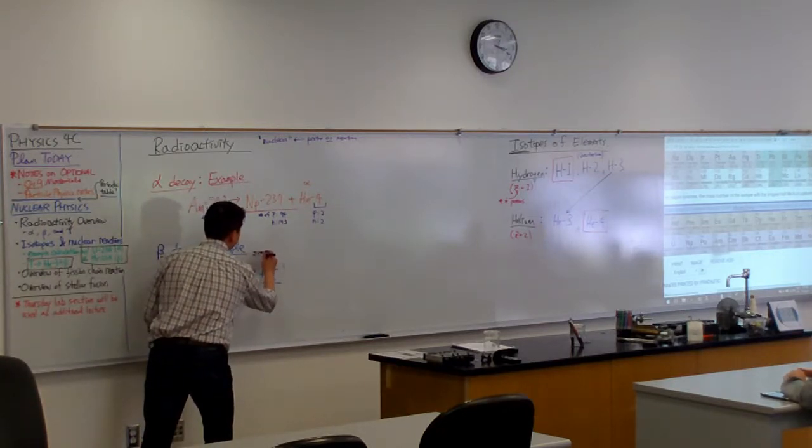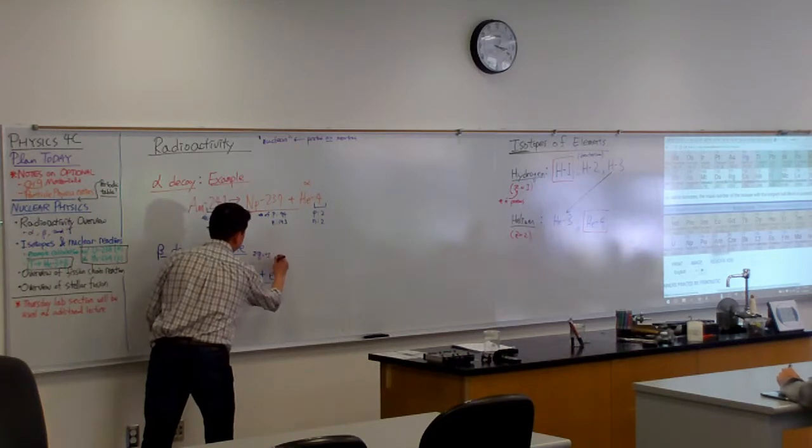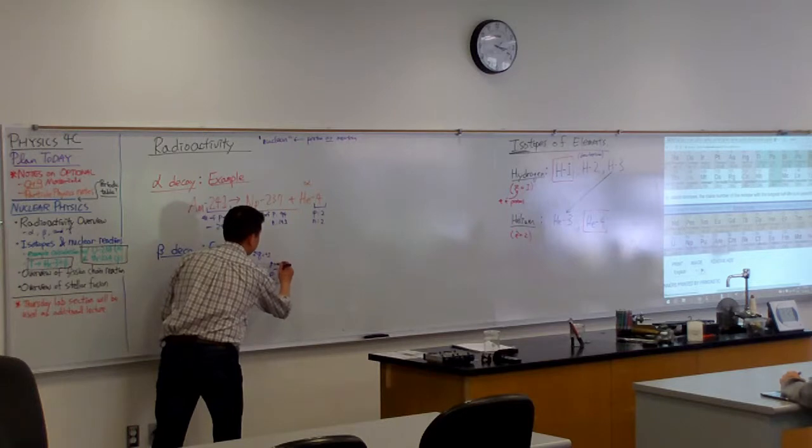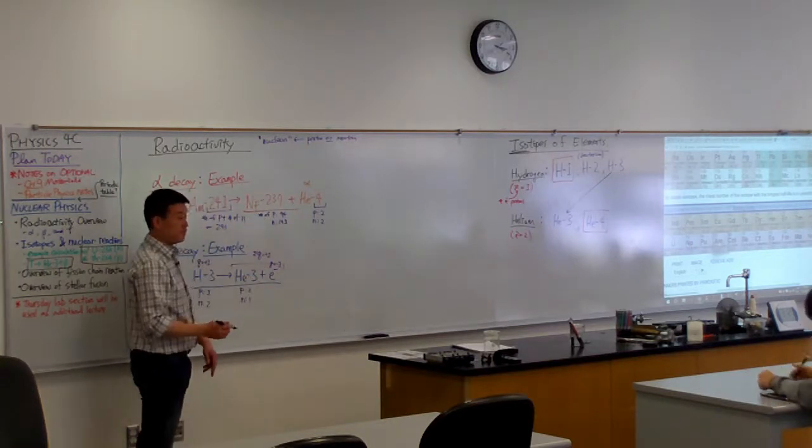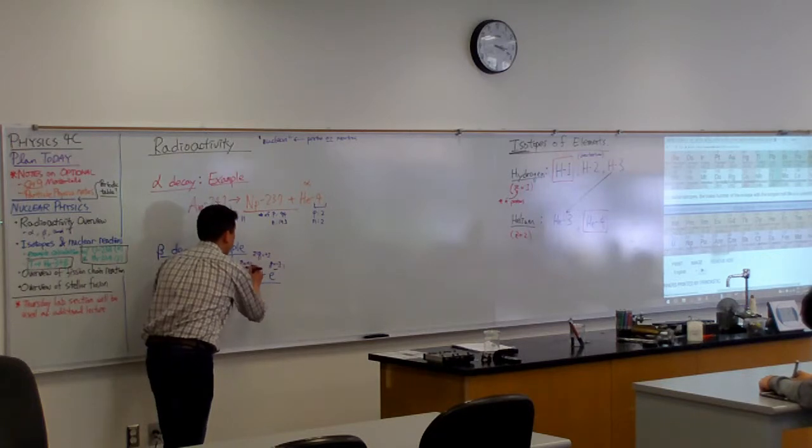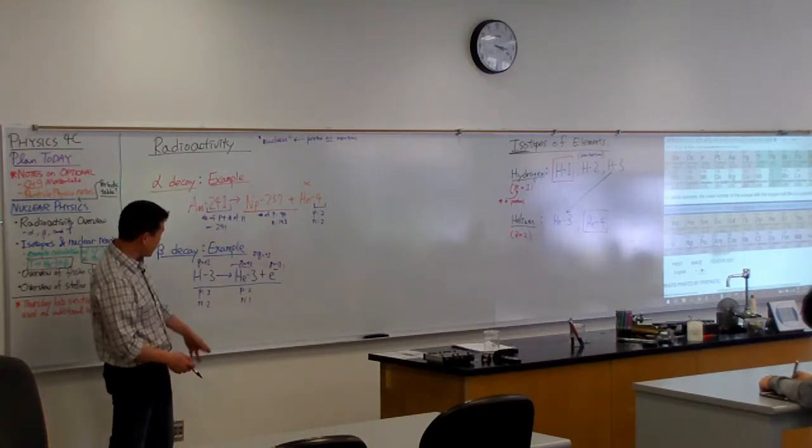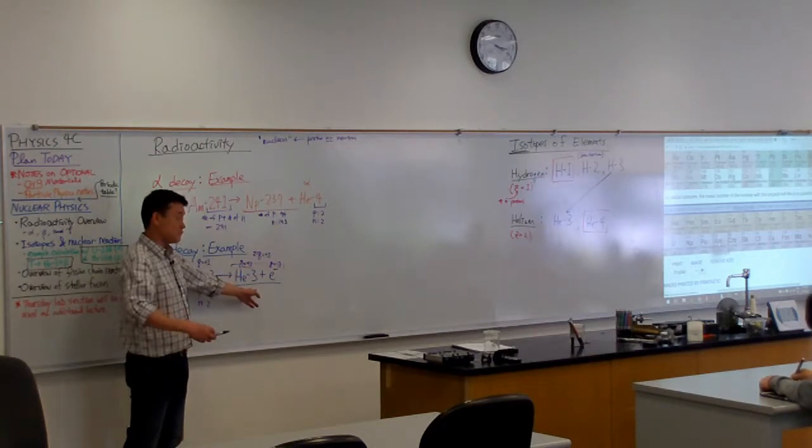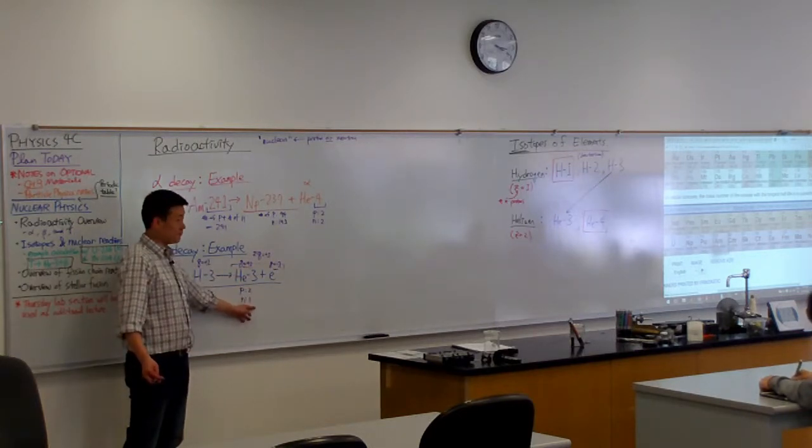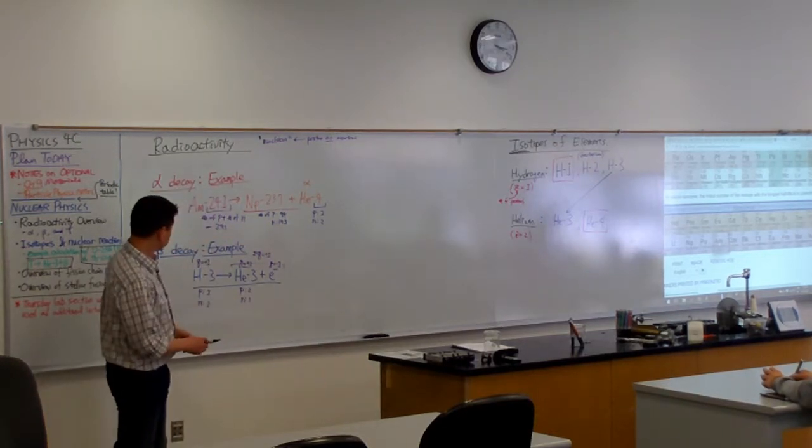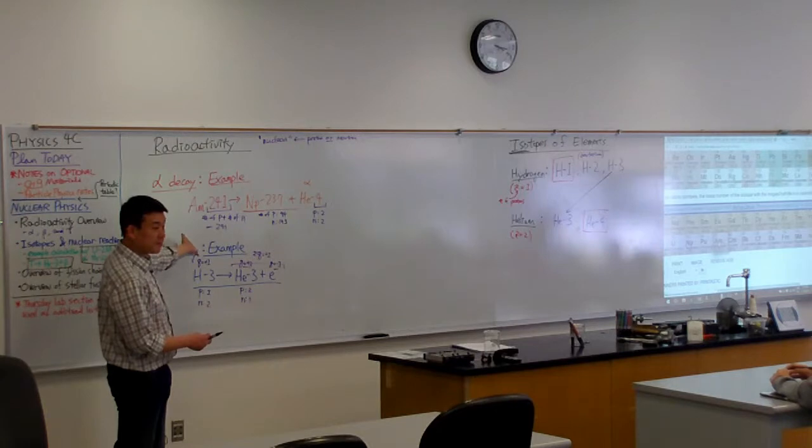So when you add up all the charges here, you want the total charge to also remain plus one. So you have Q of minus one from this electron. So this must have charge of plus two. So that they add up to one. So that means it must have two protons, which means it can have only one neutron if we are conserving number of nucleons. So, yeah, that's the beta decay example.